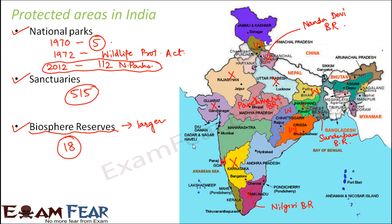You have Great Nicobar biosphere reserve in Andaman and Nicobar Islands. So here you have the Great Nicobar biosphere reserve. That means you have a total of 18 biosphere reserves in India. So this is the count of the protected areas in India.